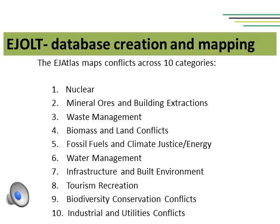The main goal of the project is putting together as much information as possible about various environmental struggles happening all around the world in a world atlas of environmental conflicts. The EJAtlas maps conflicts around ten categories: nuclear; mineral, ores and building extractions; waste management; biomass and land conflicts; fossil fuels and climate justice; energy; infrastructure and built environment; tourism and recreation; biodiversity conservation conflicts; and industrial and utilities conflicts.